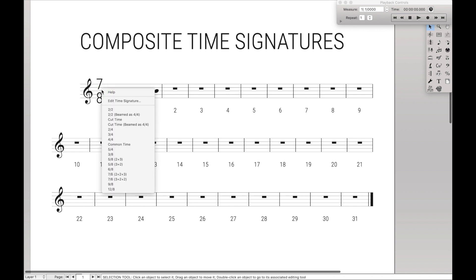Like you may have noticed that if you have a time signature and you want to edit it, you already have a bunch of composite time signatures set up for you. Like you have 5-8, which is 2 plus 3, and also 5-8, 3 plus 2, and 7-8, 2 plus 2 plus 3, and 7-8, 3 plus 2 plus 2.